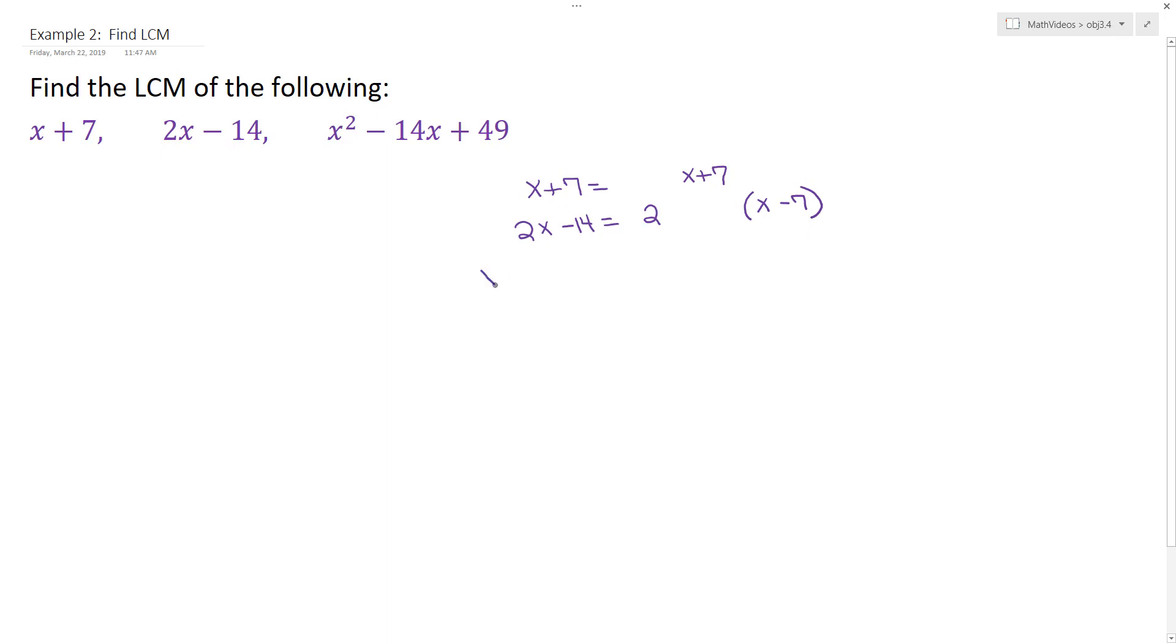And then we'll work on our third expression, which is x squared minus 14x plus 49. Now on this example, we're not going to do the greatest common factor, but instead we're going to reverse FOIL.